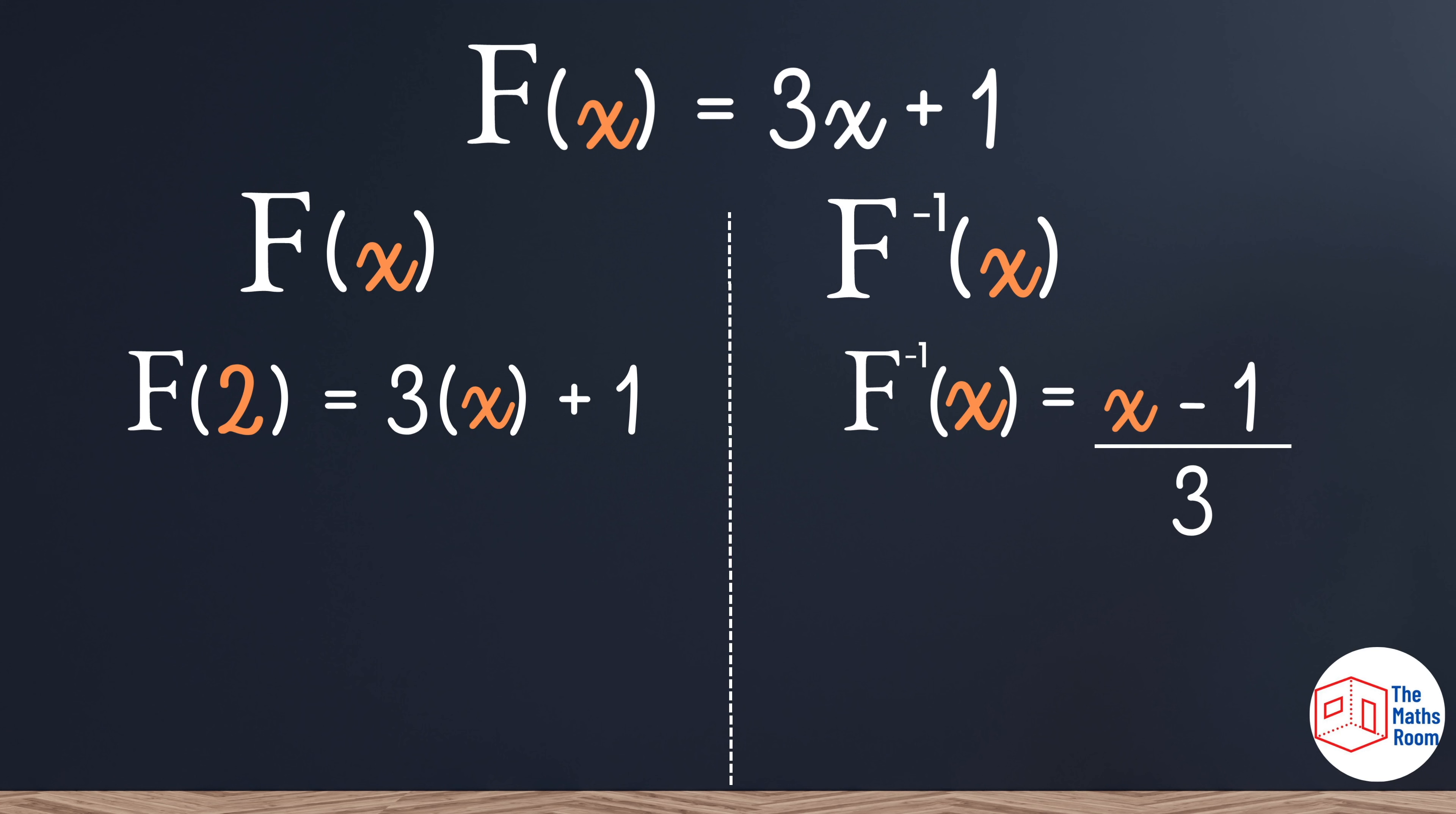Wherever I see an x I'm going to replace it with my 2. So 3 times 2 becomes 6. 6 plus 1 gets 7. So if I input a 2 I get an output which is a 7.